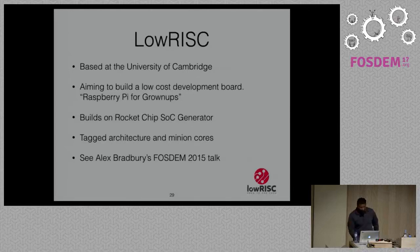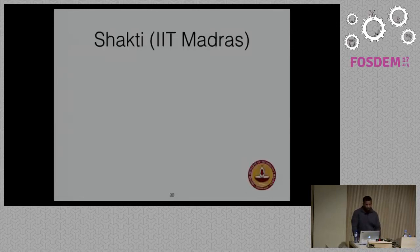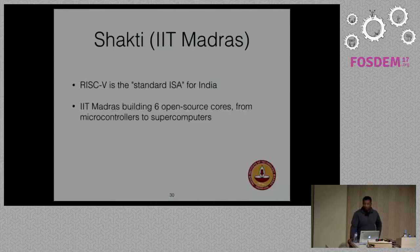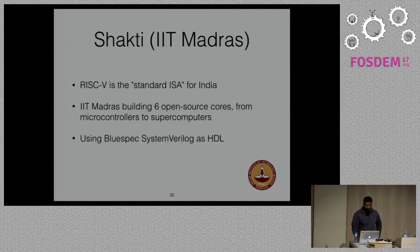The Shakti cores from IIT Madras are another set of RISC-V SOCs. RISC-V is apparently the standard ISA for India, which is cool. As a result, IIT is building six open source cores literally going from microcontrollers to supercomputers — a lot of people building RISC-V hardware there. They're using BlueSpec System Verilog as their HDL of choice, and you can find their code on Bitbucket.